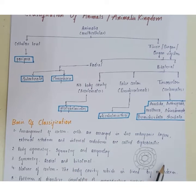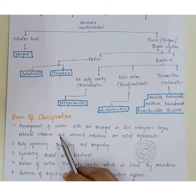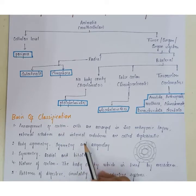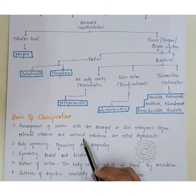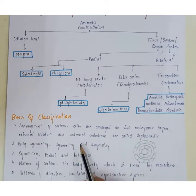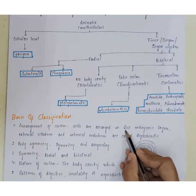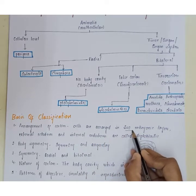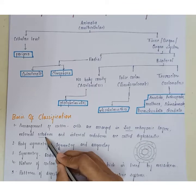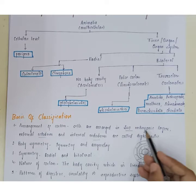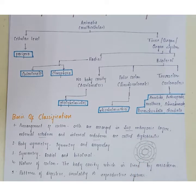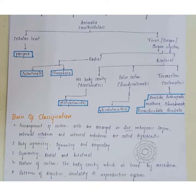The basis of classification includes arrangement of coelom and embryonic layers. Cells can be arranged in two embryonic layers: the external ectoderm and the internal endoderm. If only two embryonic layers are present, the animals are called diploblastic. If mesoderm is present between the ectoderm and endoderm, they are called triploblastic animals.